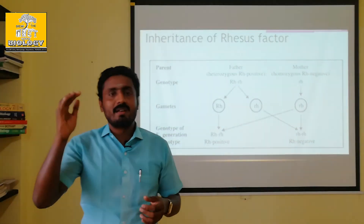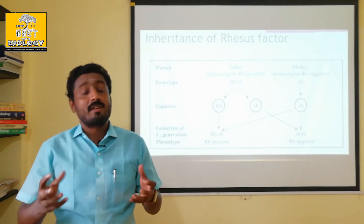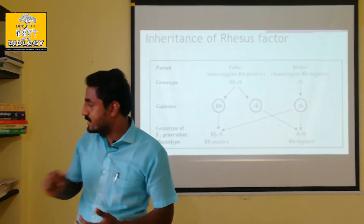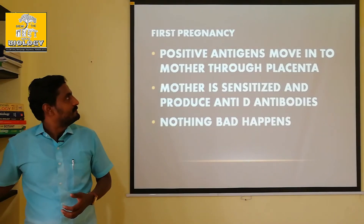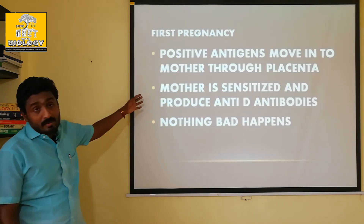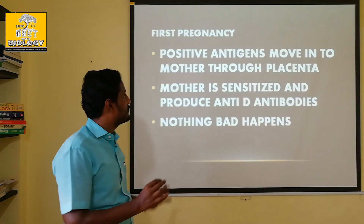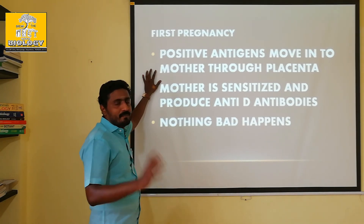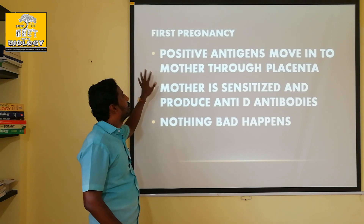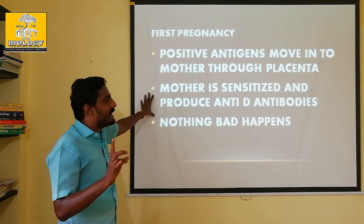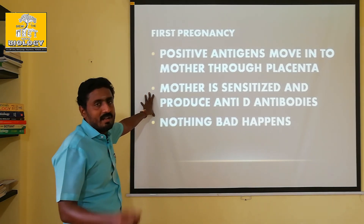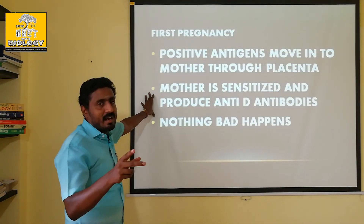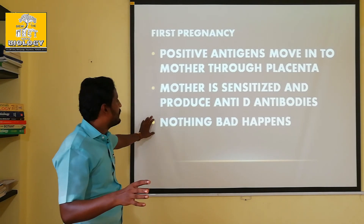Erythroblastosis fetalis is a blood disease that can be fatal for the baby. To explain: during the first baby's birth, the mother becomes sensitized and produces anti-D antibodies. When the first baby has a positive blood group, these antibodies are produced, but nothing bad happens to the first baby.